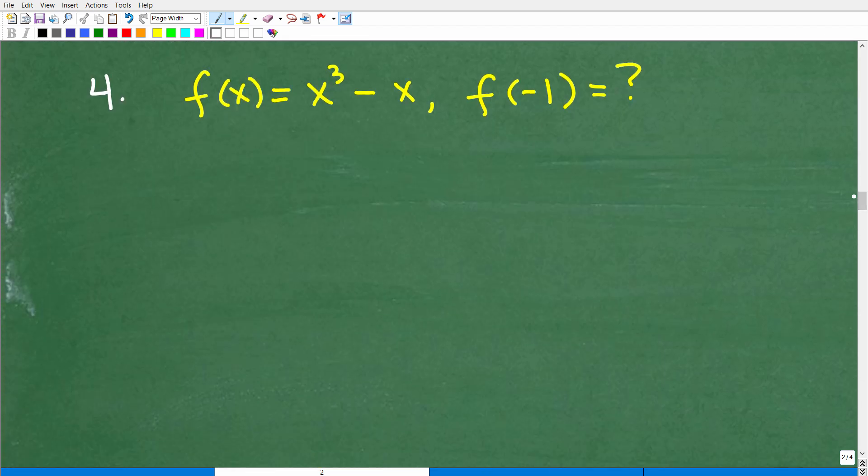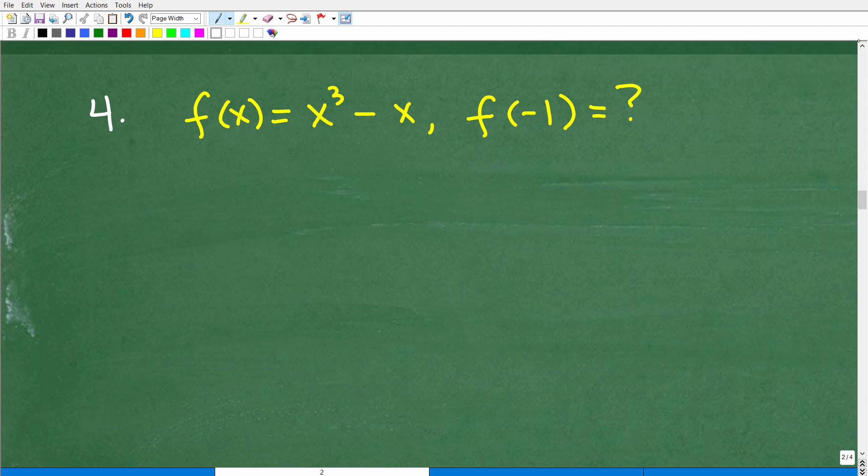Okay, so we're dealing with a function. Now, again, a huge topic. I'm not going to teach about functions. But what does this mean right here? F of negative 1. Well, it means plug in a negative 1 into this function, and this x right here, we're going to replace with a negative 1. So all these x's, we're going to plug in a negative 1, and we're going to simplify the function. So let's go ahead and see that work right now. So we're going to write the function f(x) is equal to x cubed minus x, and then we're going to evaluate this function for negative 1.